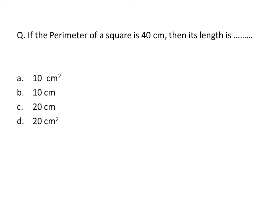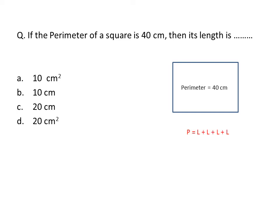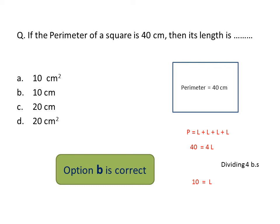Next question: if the perimeter of a square is 40 centimeters, then its length is? We have a square with perimeter = 40 centimeters. The perimeter formula for a square is the sum of all four sides: length + length + length + length = 4L. So 4L = 40. Dividing both sides by 4: L = 40 ÷ 4 = 10 centimeters. Option B is correct. Verification: 10 + 10 + 10 + 10 = 40 centimeters. ✓